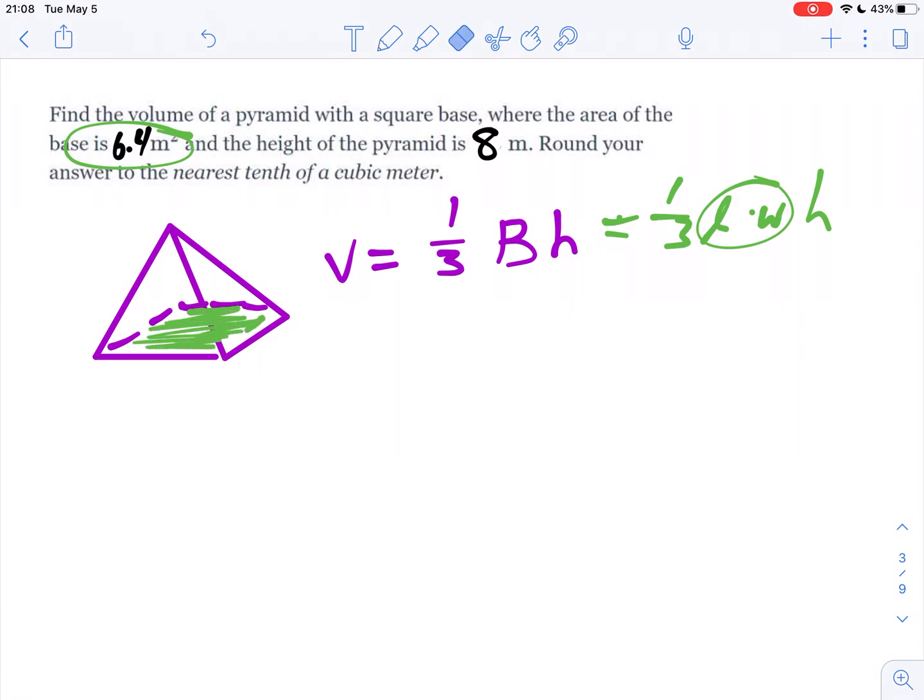So we're going to use this form of the formula, just because it's a little bit easier for this problem, since we're given that exact base area. In general, when you see formulas like this, a capital letter indicates that it's something other than a length, usually some other parameter than just a side length.